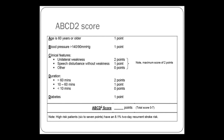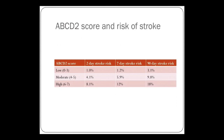The ABCD2 score components are: Age — if the patient is old; Blood pressure — if they're hypertensive; Clinical features — what they presented with, where weakness is scored worse than speech; Duration — the longer the symptoms lasted, the more likely they are to have a subsequent stroke; and Diabetes, which puts you at increased risk. Someone who scores maximum on the ABCD2 has an 8% risk of stroke within two days, which is why it is so important to manage these patients effectively after TIA.